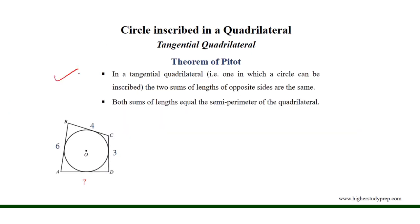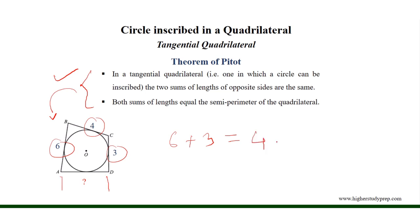Now, if we apply the theorem in this figure, we can determine the length of side AD. According to the theorem, 6 plus 3 — the sum of the lengths of opposite sides — equals 4 plus the length of AD, which helps us to get that the length of side AD equals 5 cm.